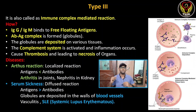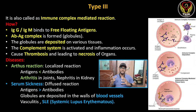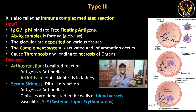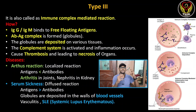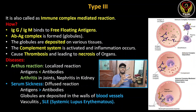The antibodies bind free antigen — we call it the antigen-antibody complex. The antibodies are IgG and IgM. This complex circulates via blood flow to various organs.